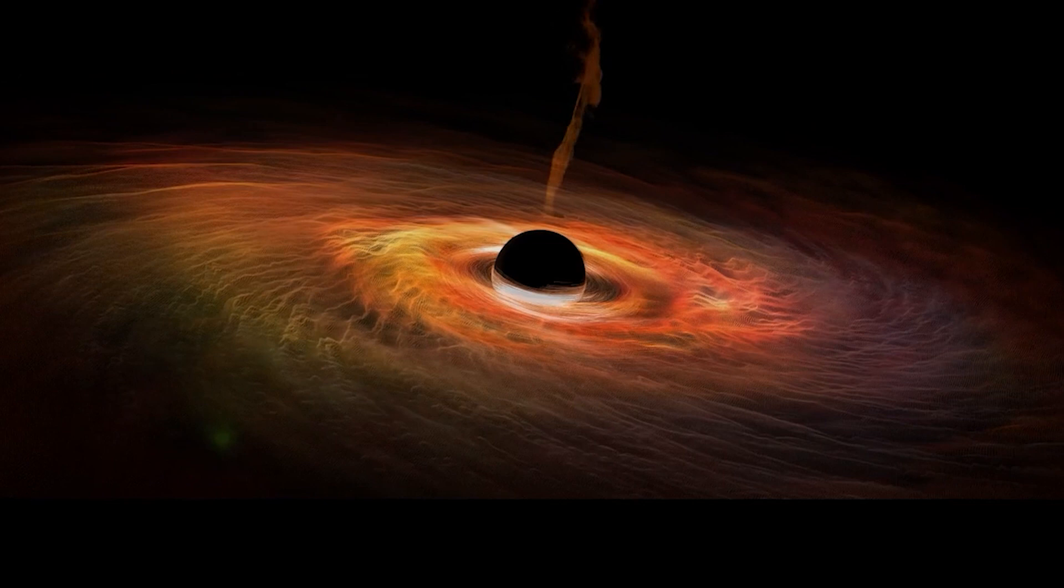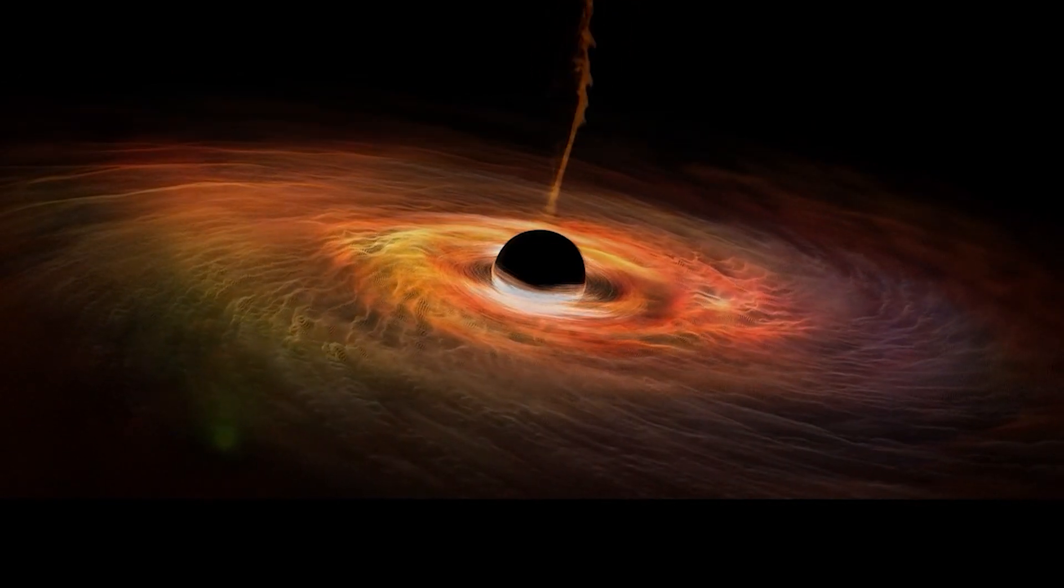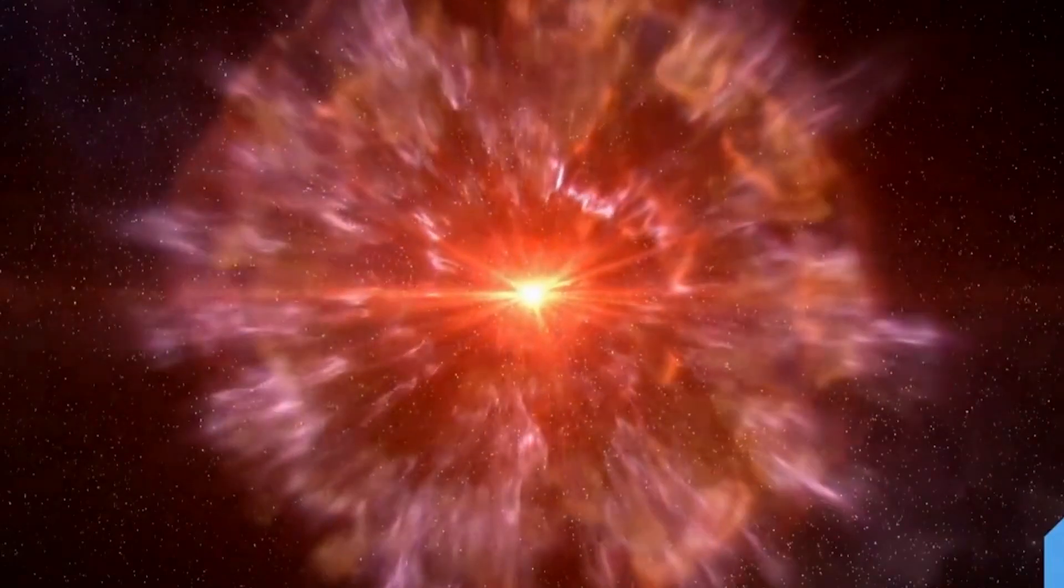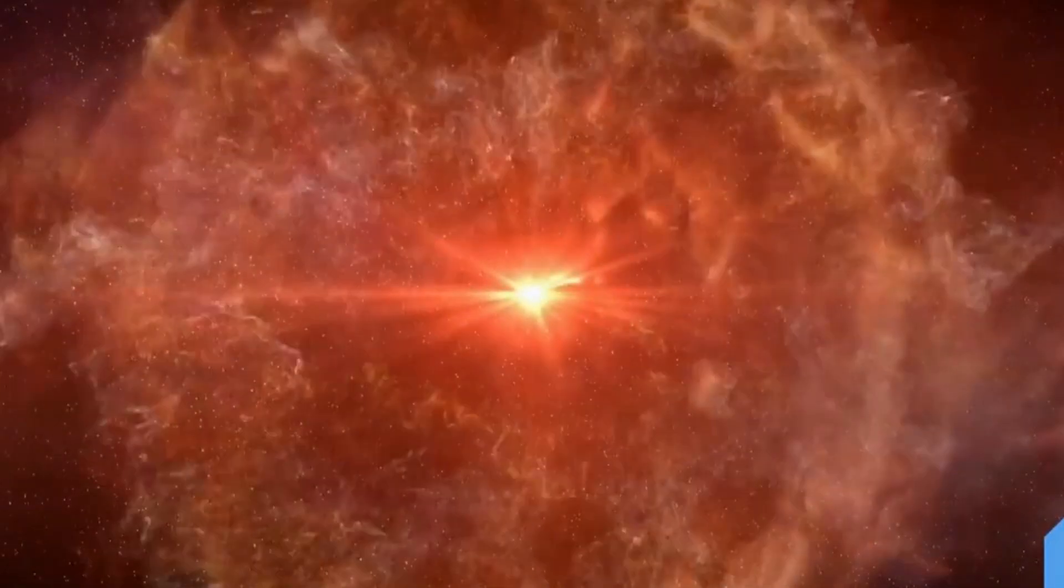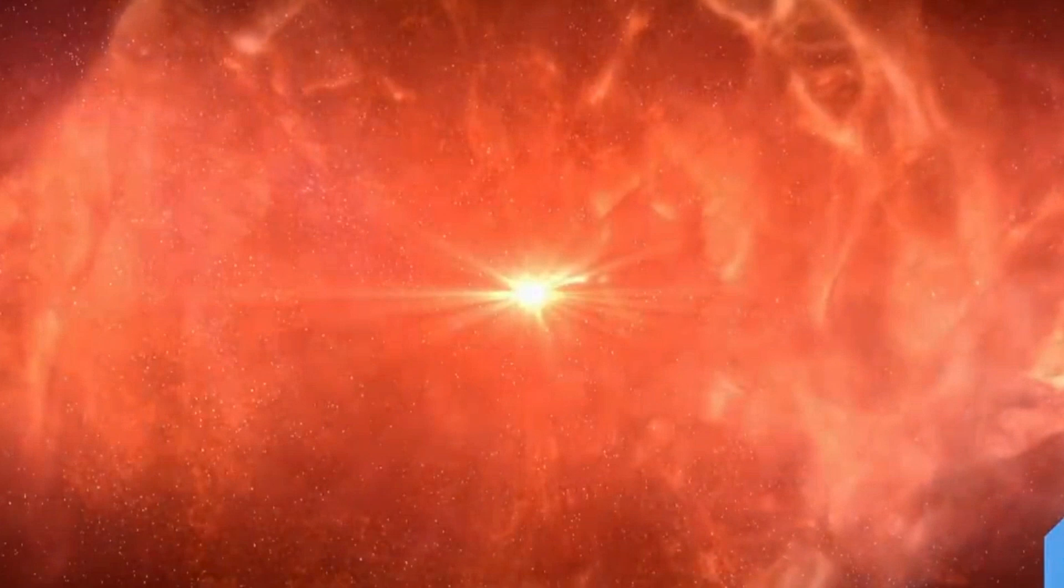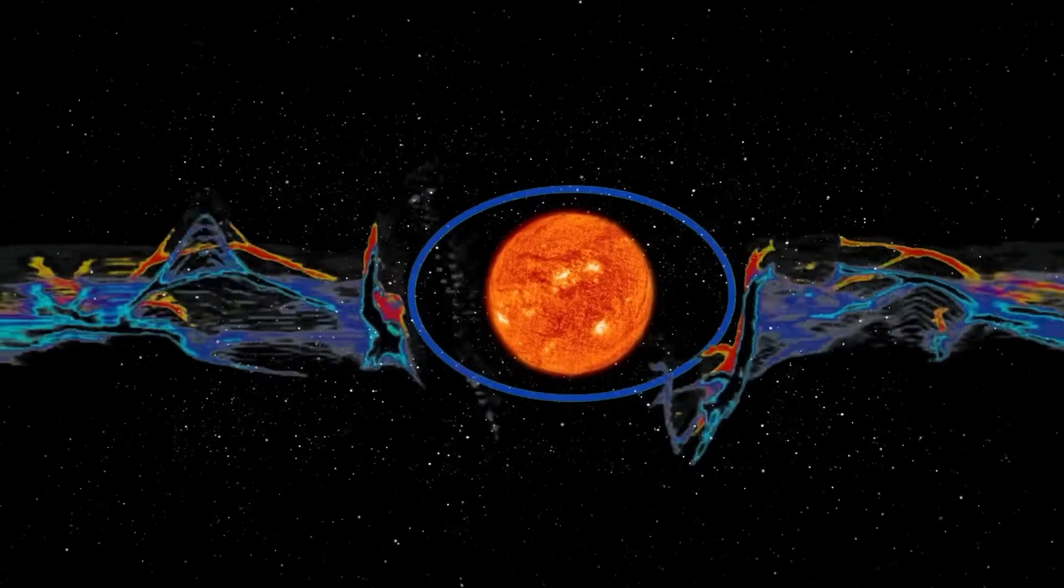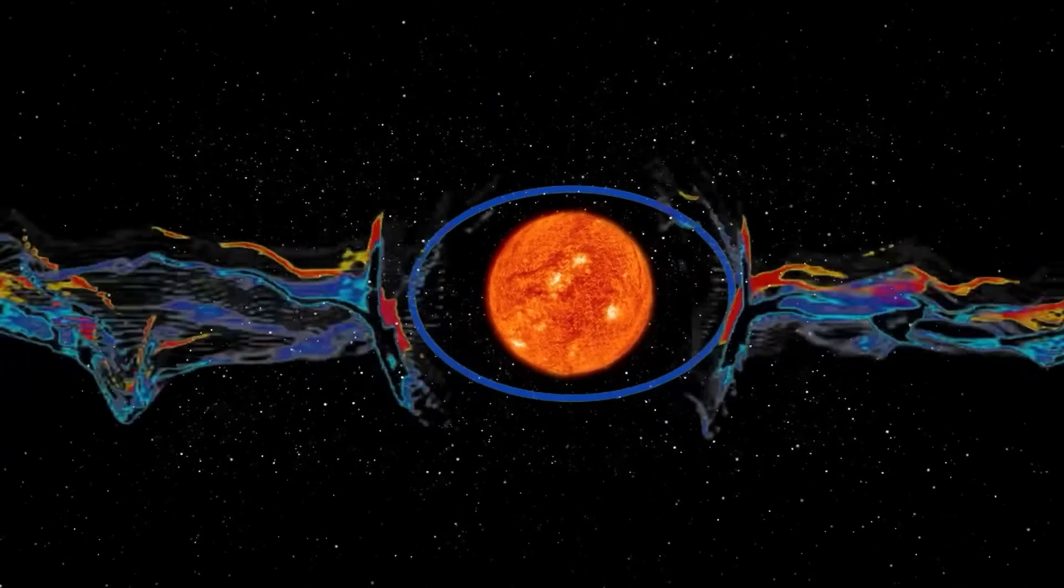You see, Betelgeuse is unstable, breathing regularly with overlapping overtones. Following its brightness over the last century, astronomers have observed changes in periods of 2,200 days, 420 days, 230 days, and 185 days.